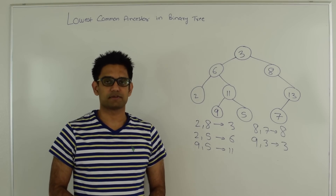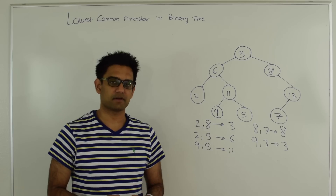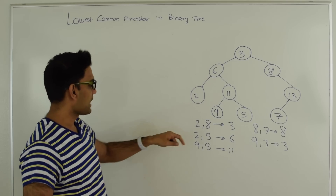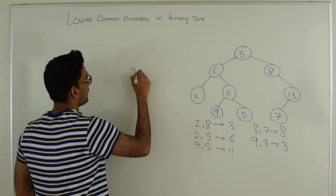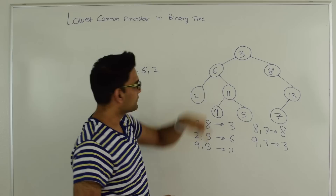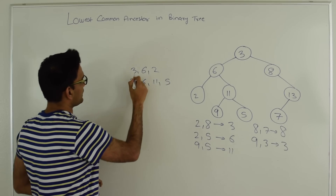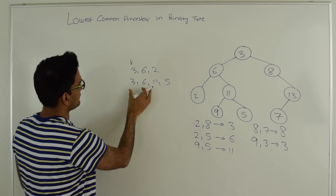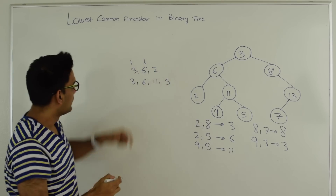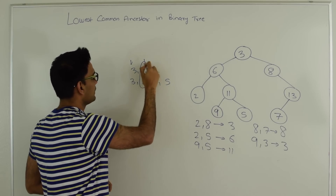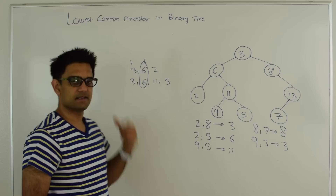So how do we solve it? There are multiple ways. One solution is to traverse the path from root to each of the two nodes and find their common nodes. For example, for nodes 2 and 5: the path from root to 2 is 3, 6, 2 and the path from root to 5 is 3, 6, 11, 5. We compare until the paths differ — 3 matches 3, 6 matches 6, but 2 and 11 do not match — so 6 is the lowest common ancestor. The problem with this approach is that it needs extra space.